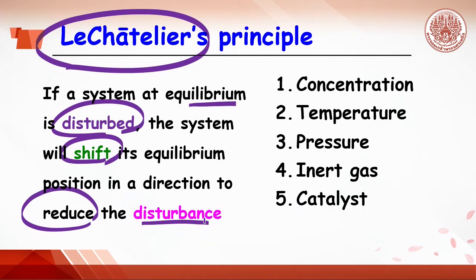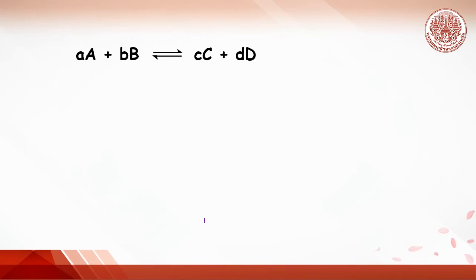In the experiment today, students will understand two effects: concentration and temperature on shifting the equilibrium. If the concentration of the reactant increases, the system tries to reduce the concentration by shifting the direction to the right, so product concentration increases.